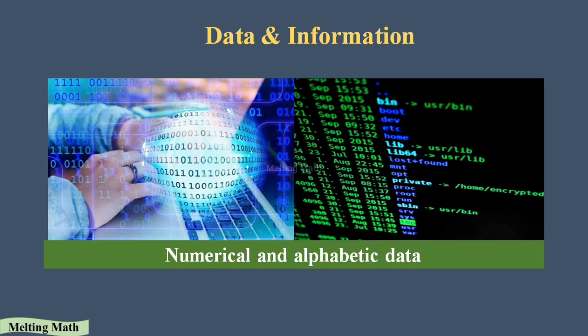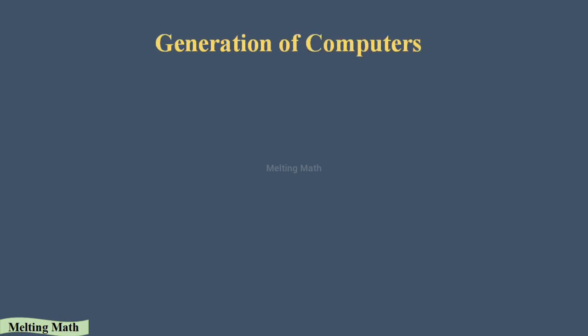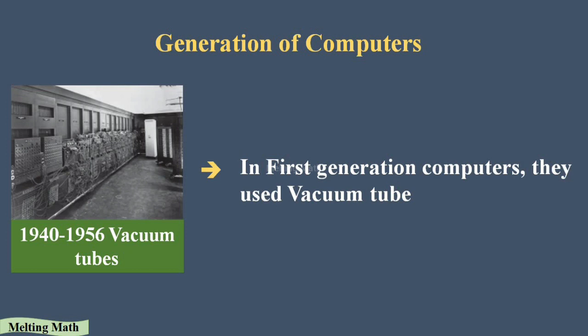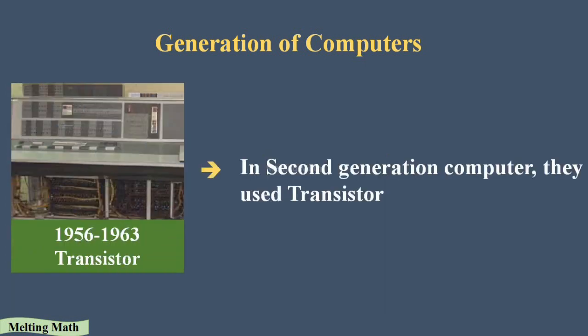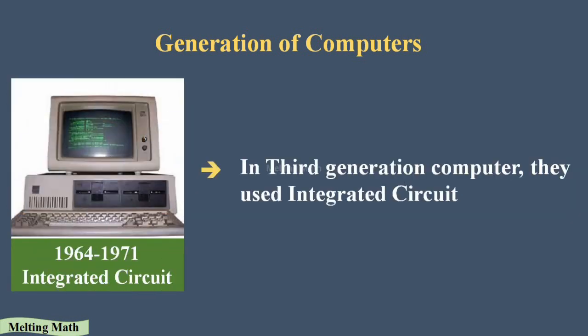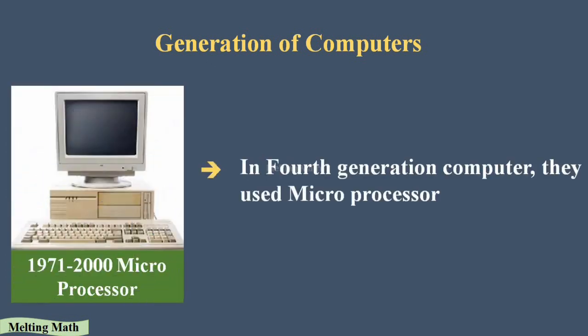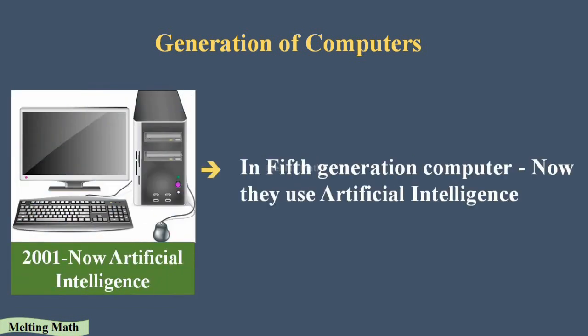We are now using fifth generation computers. Before this, there were four generations. In the first generation, vacuum tubes were used. In the second generation, transistors were used. In the third generation, integrated circuits were used for storage and processing. In the fourth generation, microprocessors were used for storing memory and data. In the fifth generation — our current generation — artificial intelligence is used, such as memory cards and pen drives.